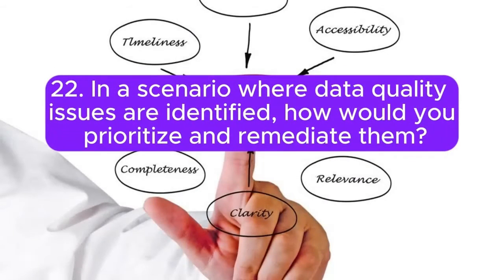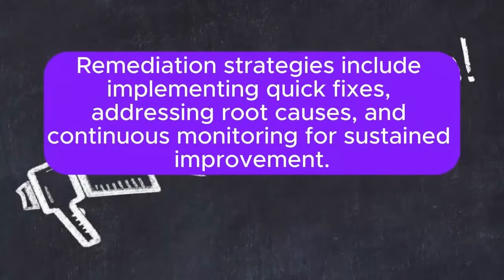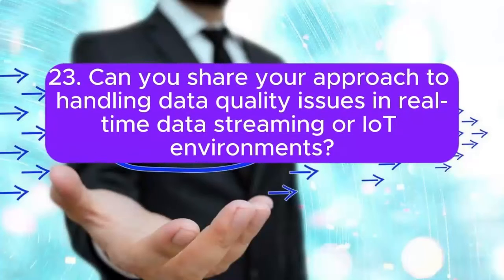22. In a scenario where data quality issues are identified, how would you prioritize and remediate them? Answer: Prioritization involves assessing the impact on business processes, regulatory compliance, and decision-making. Remediation strategies include implementing quick fixes, addressing root causes, and continuous monitoring for sustained improvement.